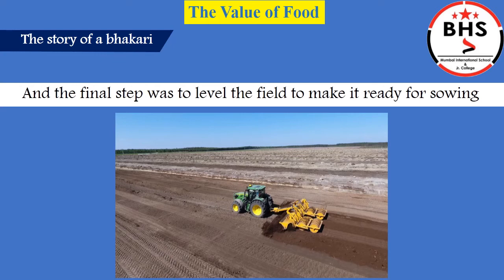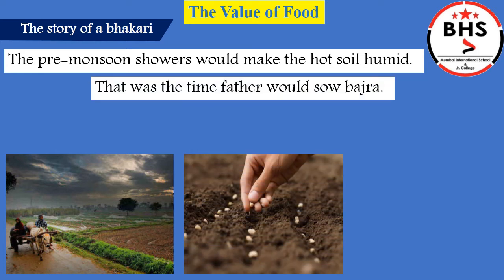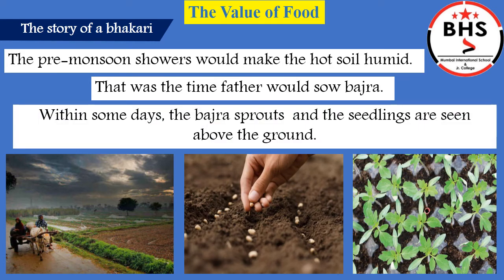Children, sowing means to plant a seed. The pre-monsoon rains — the rains between March to May — make the hot soil humid and moist. That was the time when father would sow bajra. Within some days, the bajra sprouts and begins to grow.